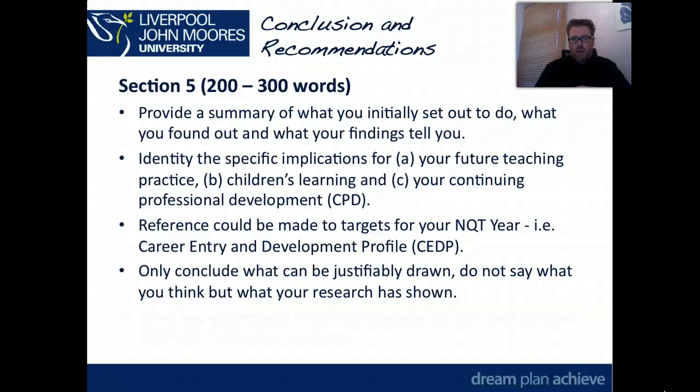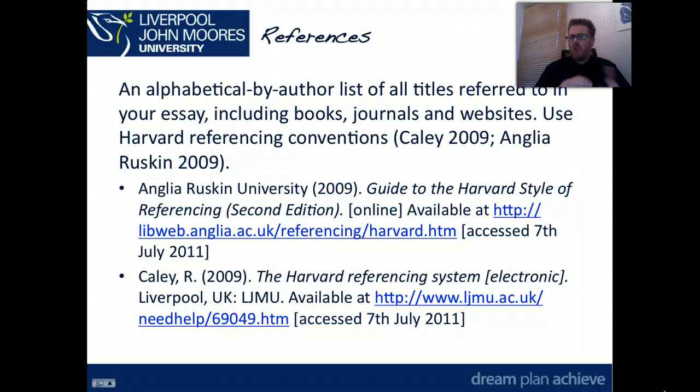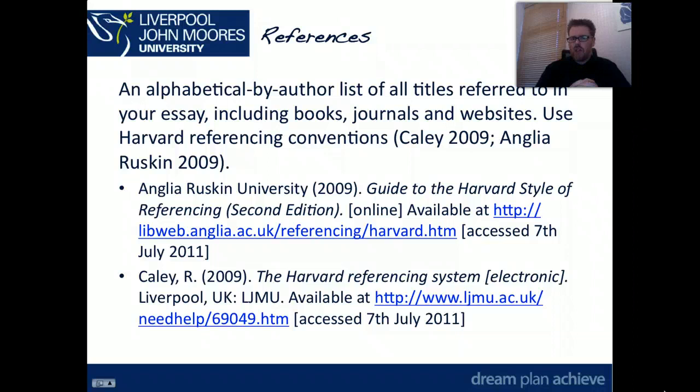Within that section it's all about key actions and recommendations you can take for the NQT year from this research project. Coming into references — whether it's books, journals, or websites, you should list them alphabetically by author. Where you've got titles by the same author, list the most recent first. There are lots of guides for referencing, but the Anglia Ruskin website and the John Muir one are worth looking at for guidance on different types of references.